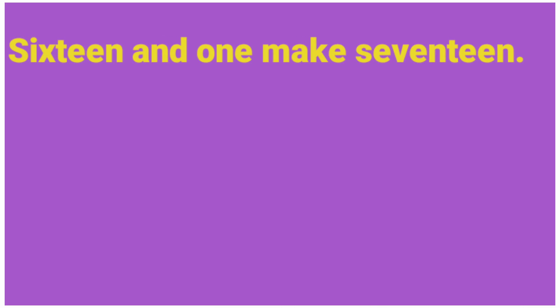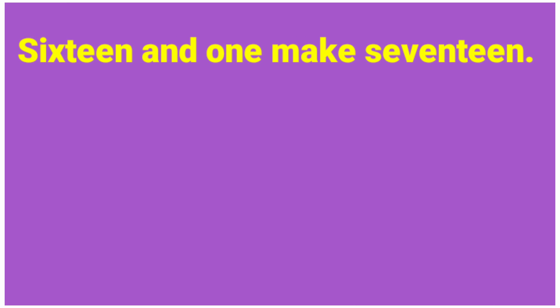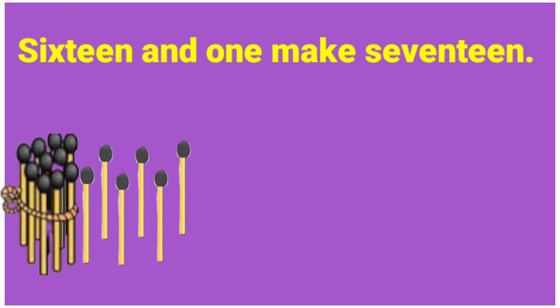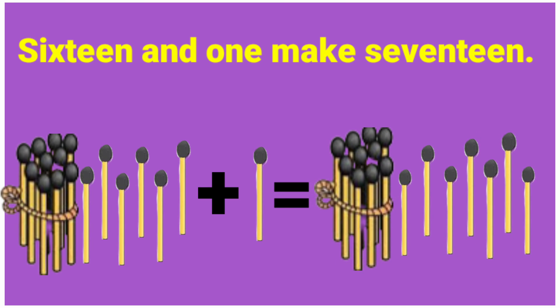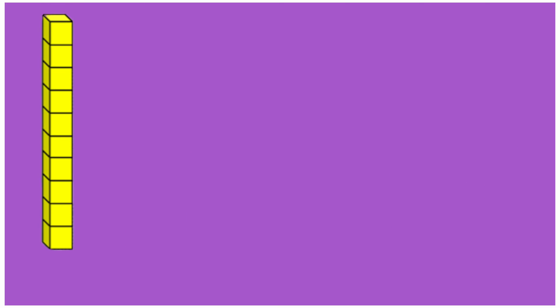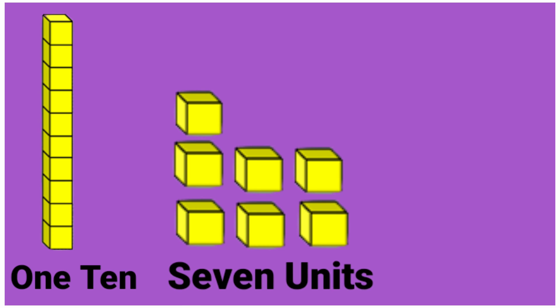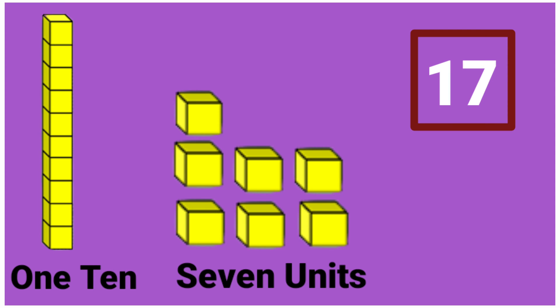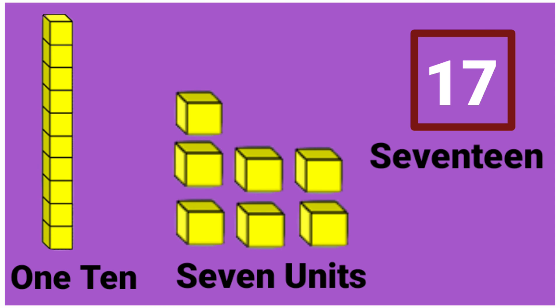16 and 1 make 17. 16 plus 1 is equal to 17. 1 ten and 7 units make 17. 17 in words: S-E-V-E-N-T-E-E-N. 17.